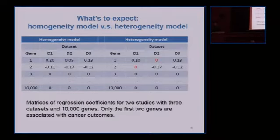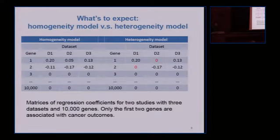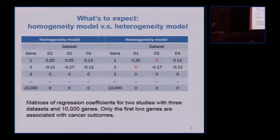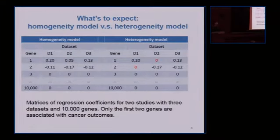Two years ago we proposed two models. The first is called a homogenetic model, and the second a heterogenetic model. In the homogenetic model, you expect the model sparsity structures to be identical across datasets — if you identify one gene in a study, you identify the same gene in other studies. In the heterogenetic model, a gene can have a zero regression coefficient in one dataset but non-zero coefficients in others, allowing different sparsity structures across datasets.